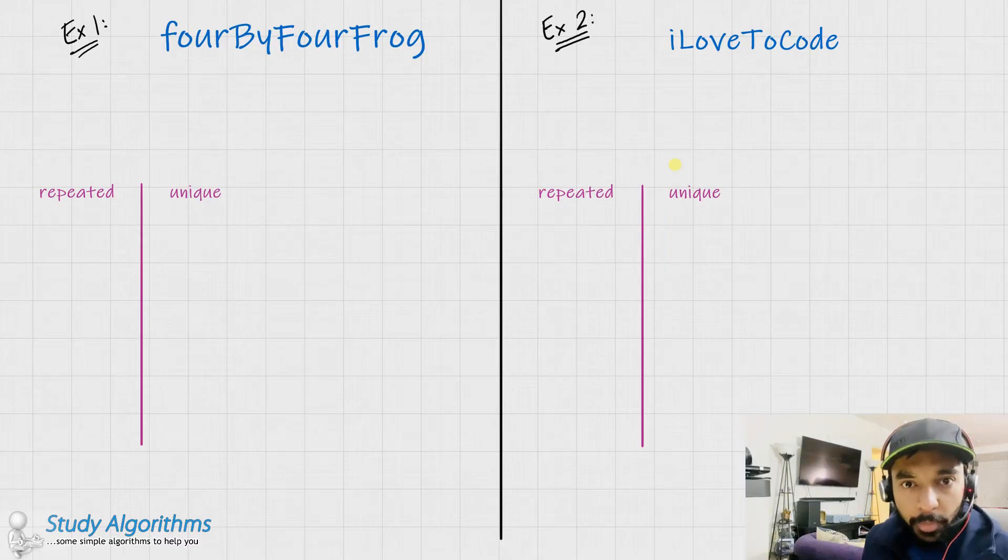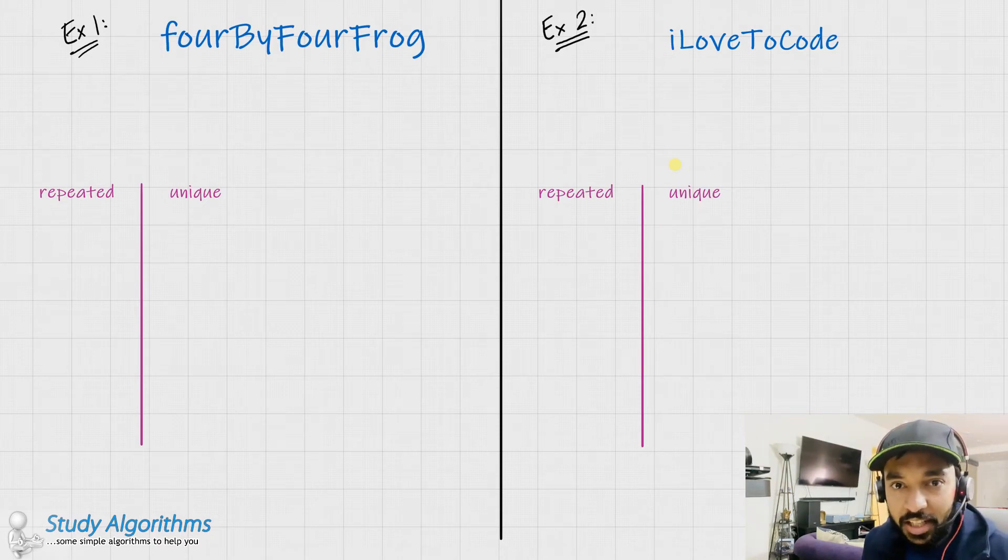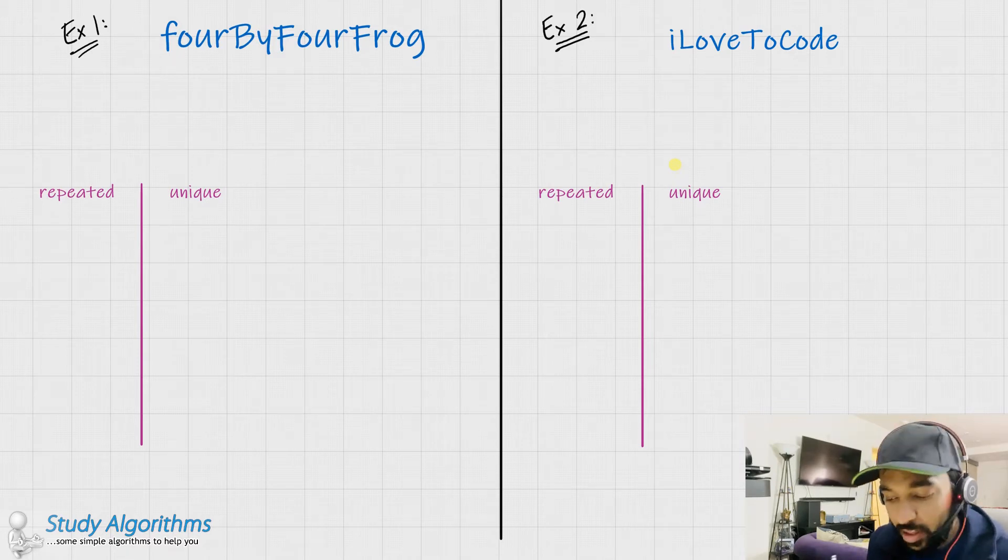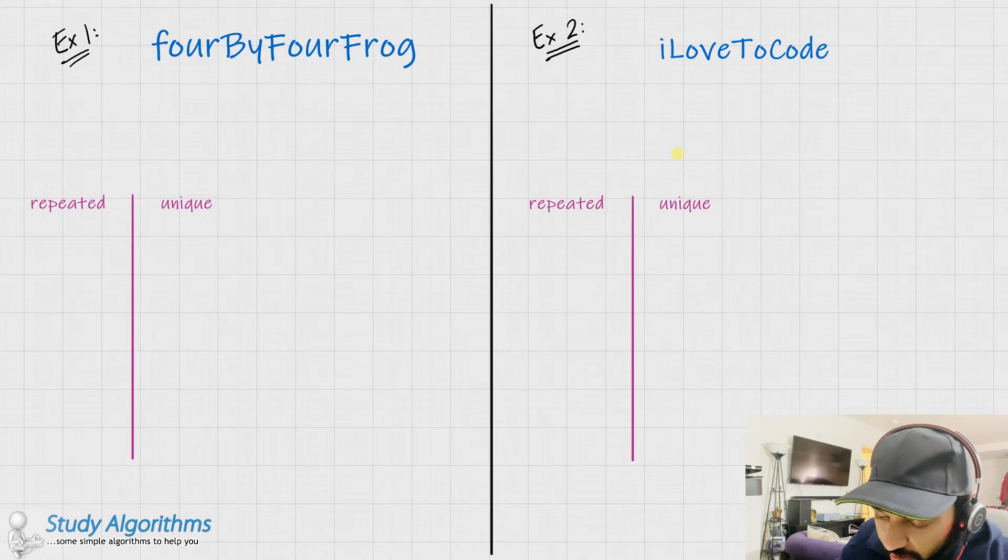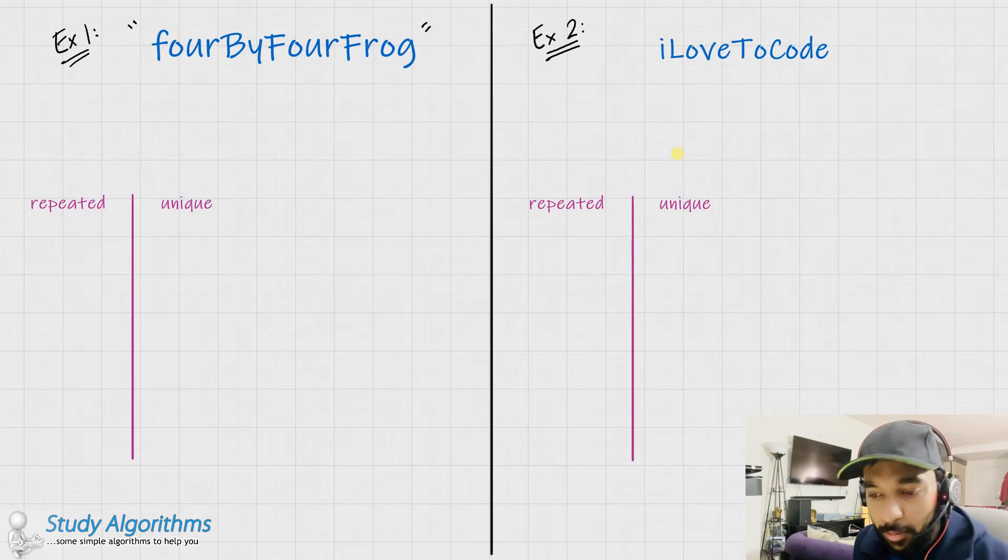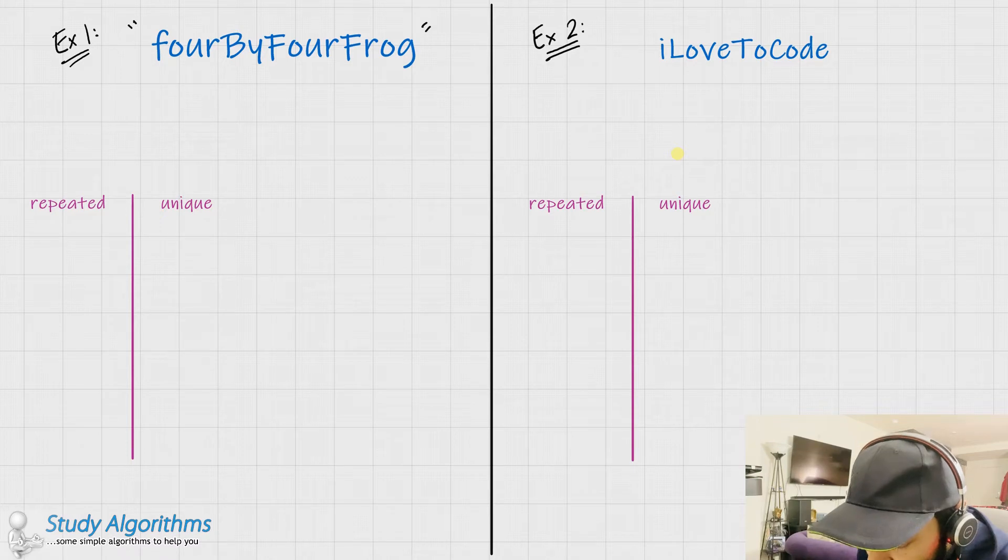We start off by taking two examples. You are given a string that may or may not contain repeating characters, and your task is to find the index of the first unique character that you find while traversing through the string. So, let us just take up example number one. The first string is given by fourByFourFrog. Now, this string, as you can see, has some characters that are repeated, and some of them are unique. So, let me just start off by writing down all the repeated characters and all the ones that are unique.